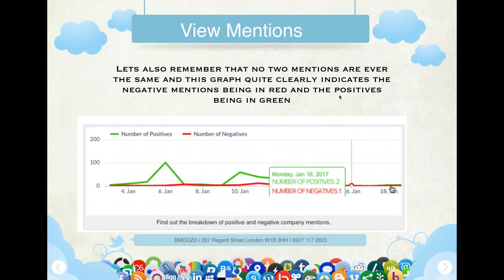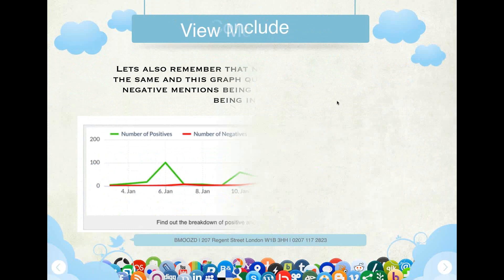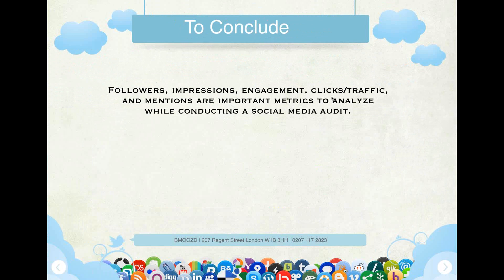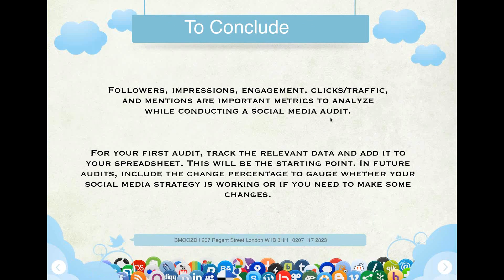No two mentions are ever the same, and this graph clearly indicates negative mentions in red and positive ones in green. No one wants negative mentions, but this graph shows you where you're going wrong. To conclude: followers, impressions, engagements, clicks, traffic, and mentions are important methods to analyze while conducting a social media audit. For your first audit, track the relevant data and add it to your spreadsheet. In future audits, include the change percentage to gauge whether your social media structure is working or if you need to make some changes.